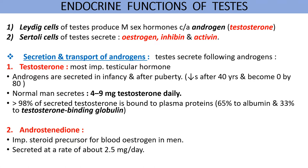Testosterone is the most important testicular hormone. Since Leydig cells appear early in intrauterine life, testosterone is secreted during intrauterine life and infancy, and again after the onset of puberty. The secretion of testosterone decreases after 40 years of age and becomes almost nil at old age. A normal man secretes about four to nine milligrams of testosterone per day, of which greater than 98 percent is bound to plasma proteins like albumin and testosterone-binding globulin (TBG). Thus, only a very small fraction of unbound testosterone is physiologically active.